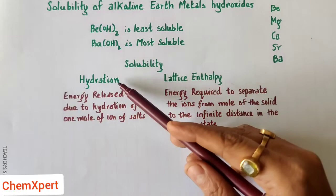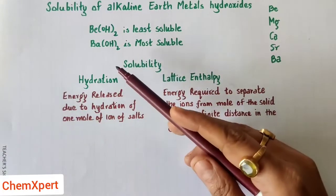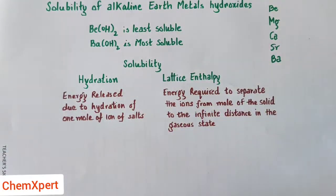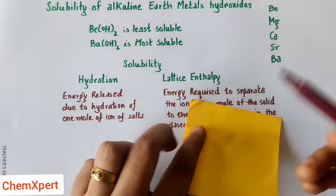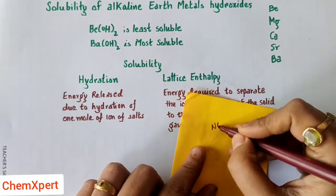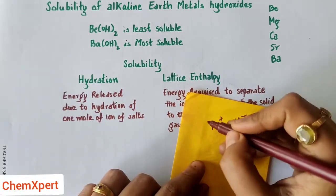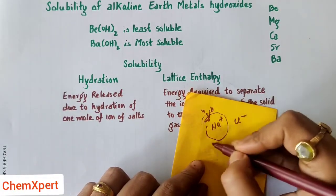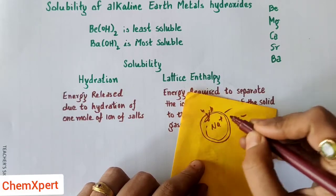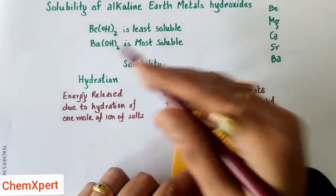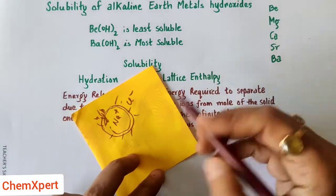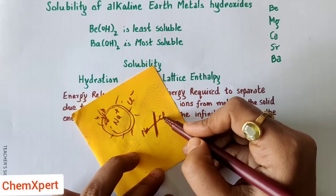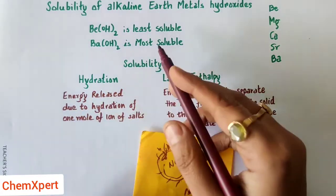The next factor is hydration enthalpy — it is the energy released due to hydration of one mole of ions. For example, when ions like Na⁺ or Cl⁻ are formed and water molecules surround them, that is hydration. The amount of energy released in this process is known as hydration energy. In lattice enthalpy, energy is required to break the bond, whereas in hydration, energy is released.